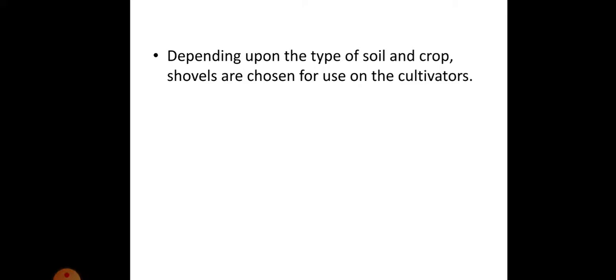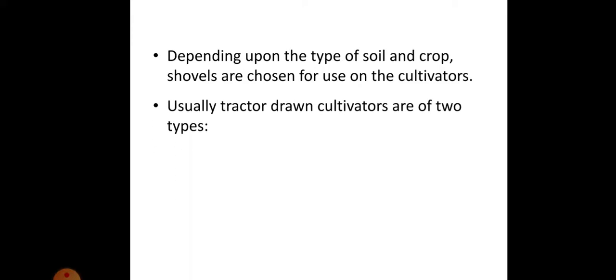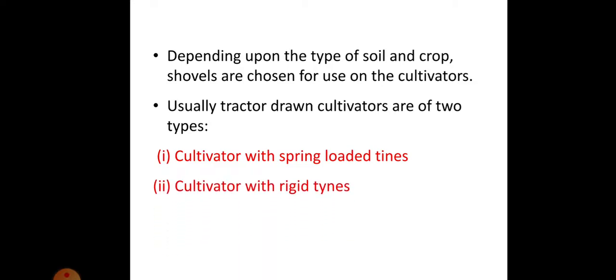Usually tractor-drawn cultivators are of two types: cultivator with spring-loaded tines and cultivator with rigid tines.